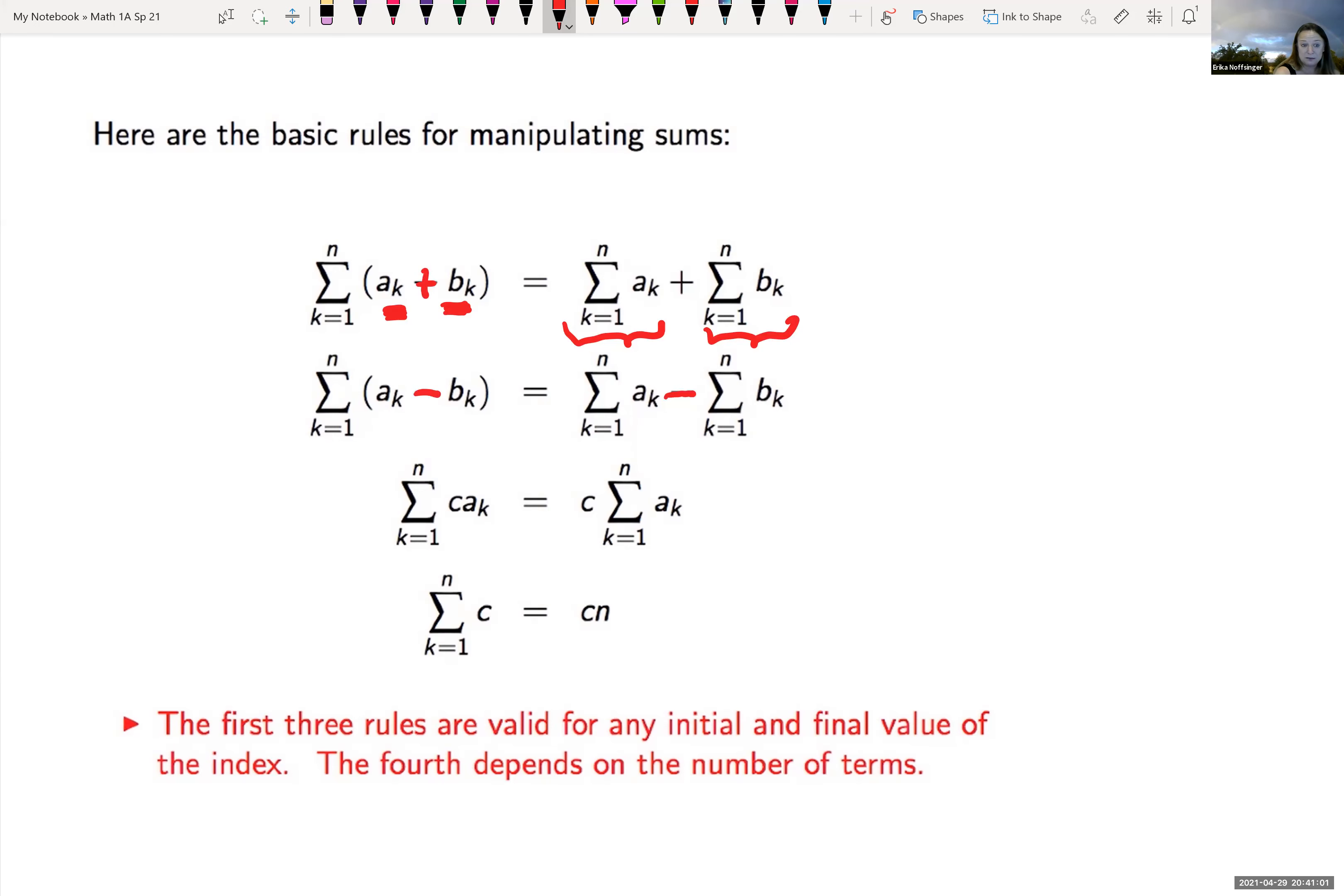If you had some coefficient in front, we can pull that coefficient out in front of the summation, figure out what the summation of a sub k is and then multiply it by c. So for instance, if we're looking at the summation of two x squared, I could look at pulling the two out in front of the summation and then taking the summation of x squared.